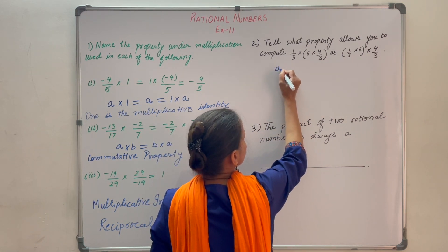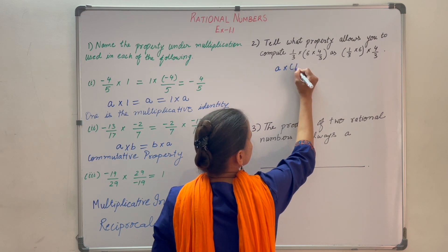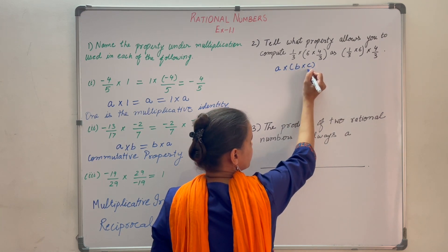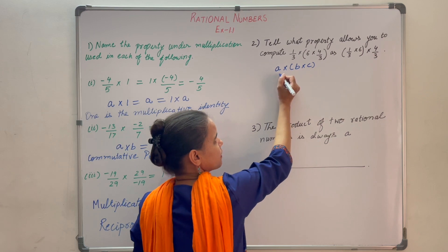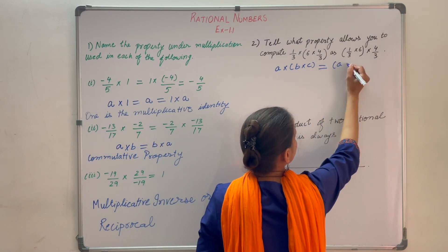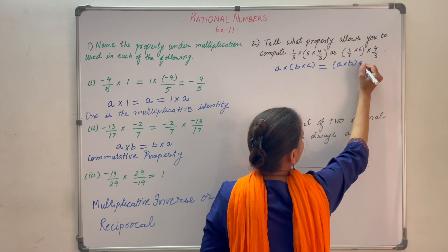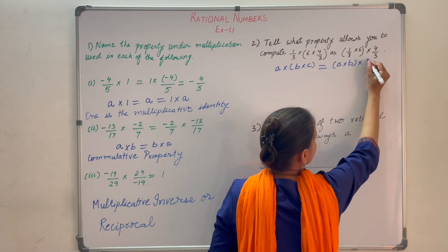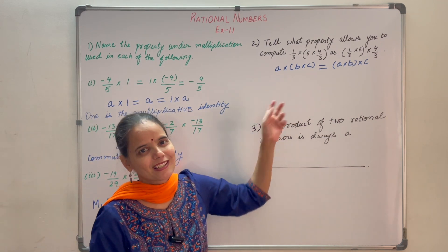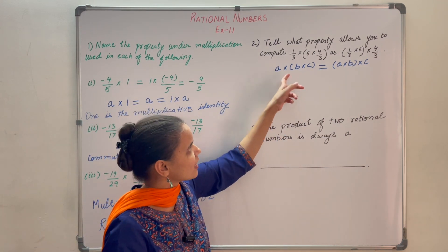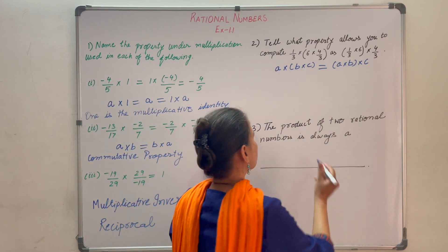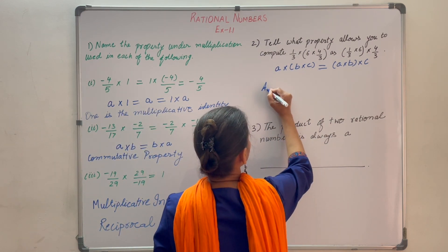If you have three rational numbers A, B, and C, then first multiplying B to C and then the result to A is the same as multiplying A to B first and then the result to C. We say that multiplication is associative for rational numbers. So the property used here is the associative property.